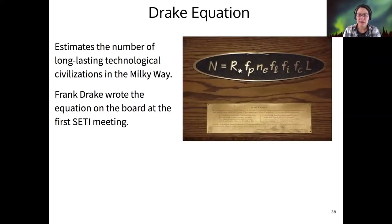The Drake equation was just written down by Frank Drake on the chalkboard at the first SETI meeting. And what it tries to do is estimate the number of long-lasting technological civilizations in the Milky Way. So technological civilizations, as we are considering it, would be civilizations capable of interstellar communication.